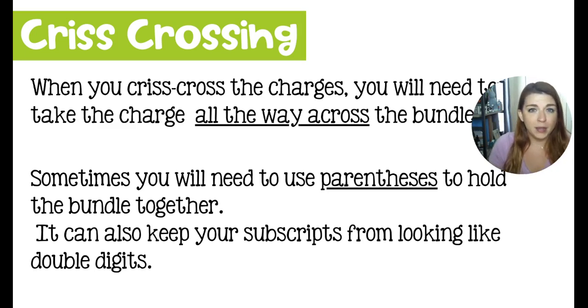Occasionally, we're going to have to wrap our polyatomic ions in parentheses in order to indicate that we have multiples of the bundle as opposed to multiples of just a single atom in the bundle. And then a lot of the times, our polys are going to have a subscript of their own. So getting a subscript and then crisscrossing, sometimes it looks like there's a double digit. So the point of crisscrossing all the way across and then wrapping in parentheses helps to prevent our subscripts from looking like double digits.